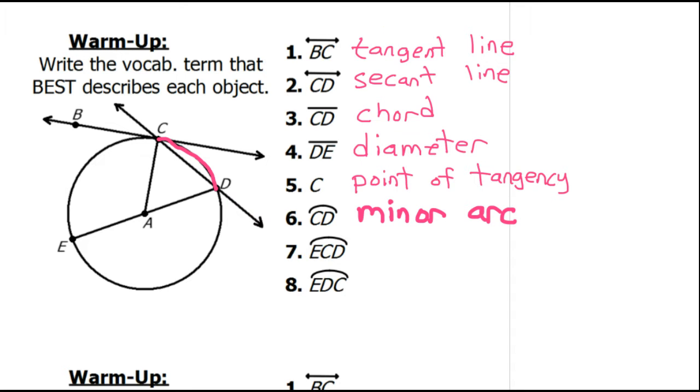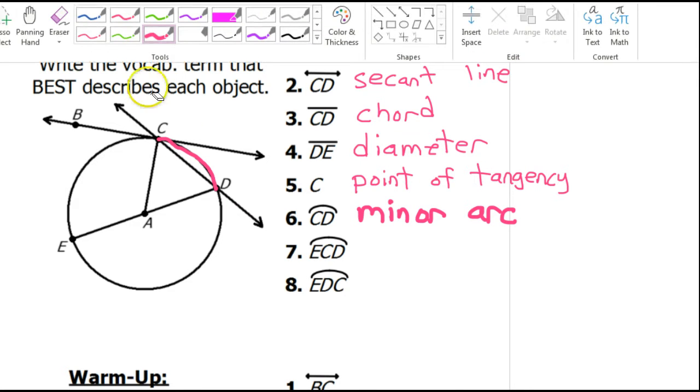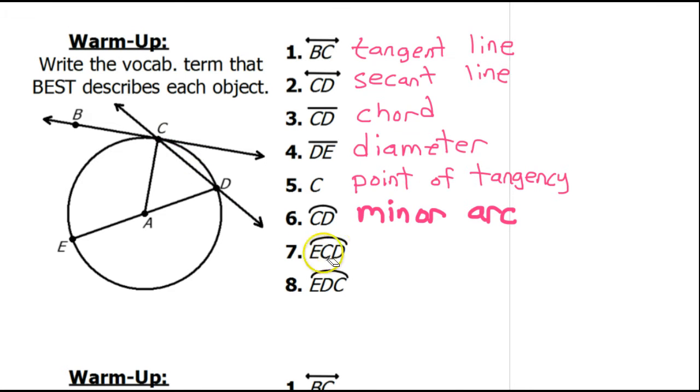If we go the long way, it will be a major arc. Now, just because there are three letters does not mean it's a major arc. So, let's pay attention. Arc ECD goes from E to C to D, in that order.